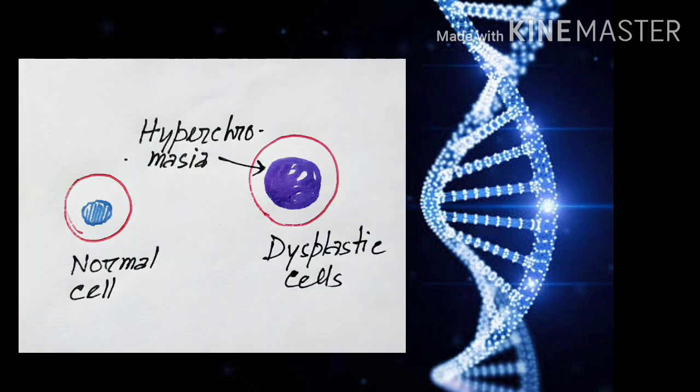Next feature is nuclear hyperchromatia. That means there is increased density of the nuclear chromatin. So the intensity of the blue color of the nucleus is high.